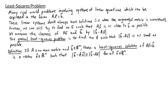Here we have the formal definition of a least squares solution to a linear system A times x equals B. If A is an M by N matrix and B is a vector in Rᵐ, then a least squares solution of A times x equals B is a vector x̂ in Rⁿ such that the magnitude of B minus A times x̂ is less than or equal to the magnitude of B minus A times x for any x in Rⁿ.